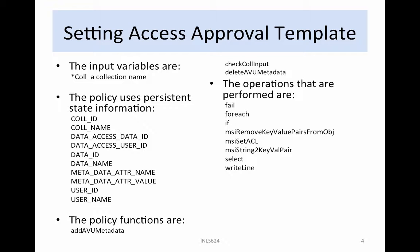The persistent state information includes call ID, the collection internal identifier, and call name, the collection name. Data access data ID is the file ID for which access control is set. Data access user ID is the user ID who has access to the file, and data ID is the file internal ID. Data name is the file name. Metadata adder name is the AVU name that will be modified — access approval.